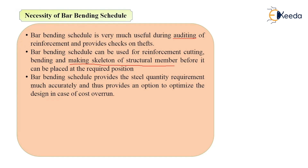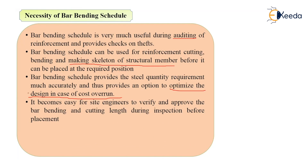BBS provides the steel quantity reinforcement much more accurately and thus provides an option to optimize the design in case of cost overrun. If at the design stage you find that the cost is higher after the BBS calculations, you can change or optimize the design. You can ask the structural engineer whether there is a possibility to reduce the steel quantity or redesign it. That is the benefit of calculating actual steel quantity using BBS.